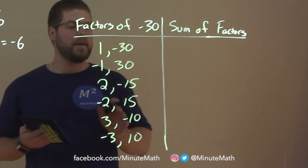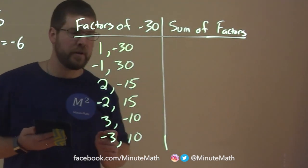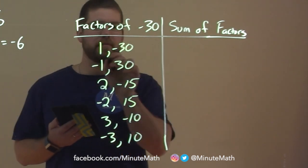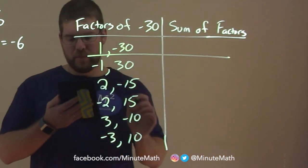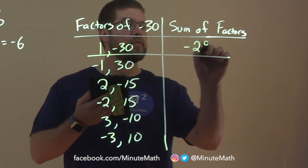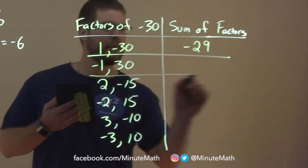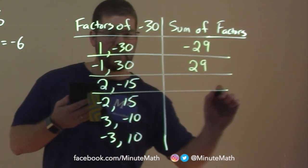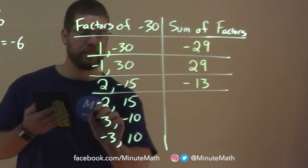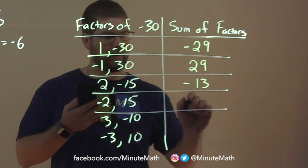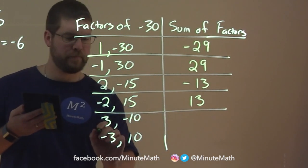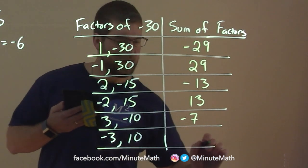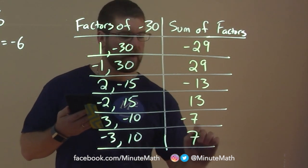So, there's no other two numbers that multiply to be negative 30. So, what we want to do is add them up. 1 plus negative 30 is negative 29. Negative 1 and 30 is positive 29. 2 and negative 15 is negative 13. Negative 2 and 15 is positive 13. 3 and negative 10, negative 7. And negative 3 and positive 10 is positive 7.